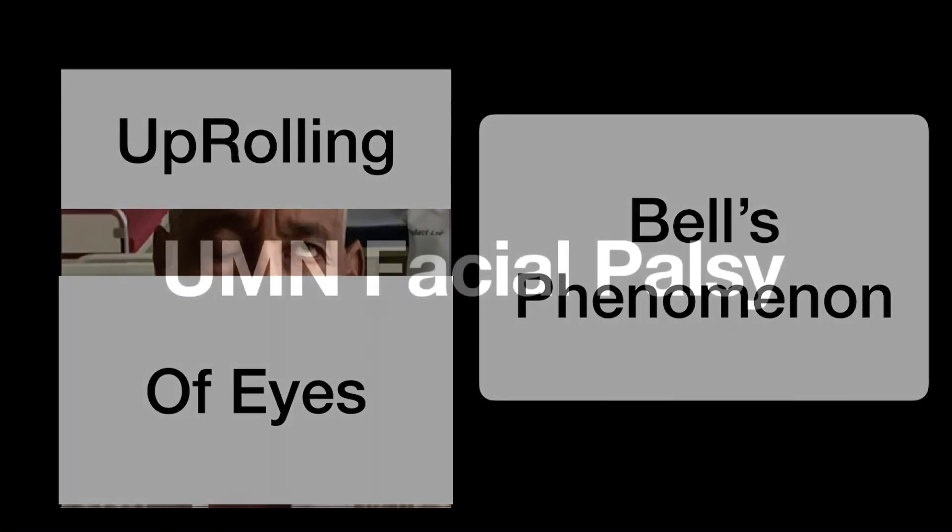Let us see the upper motor neuron type of facial palsy back to our main motor nucleus and the things that we already know by now.